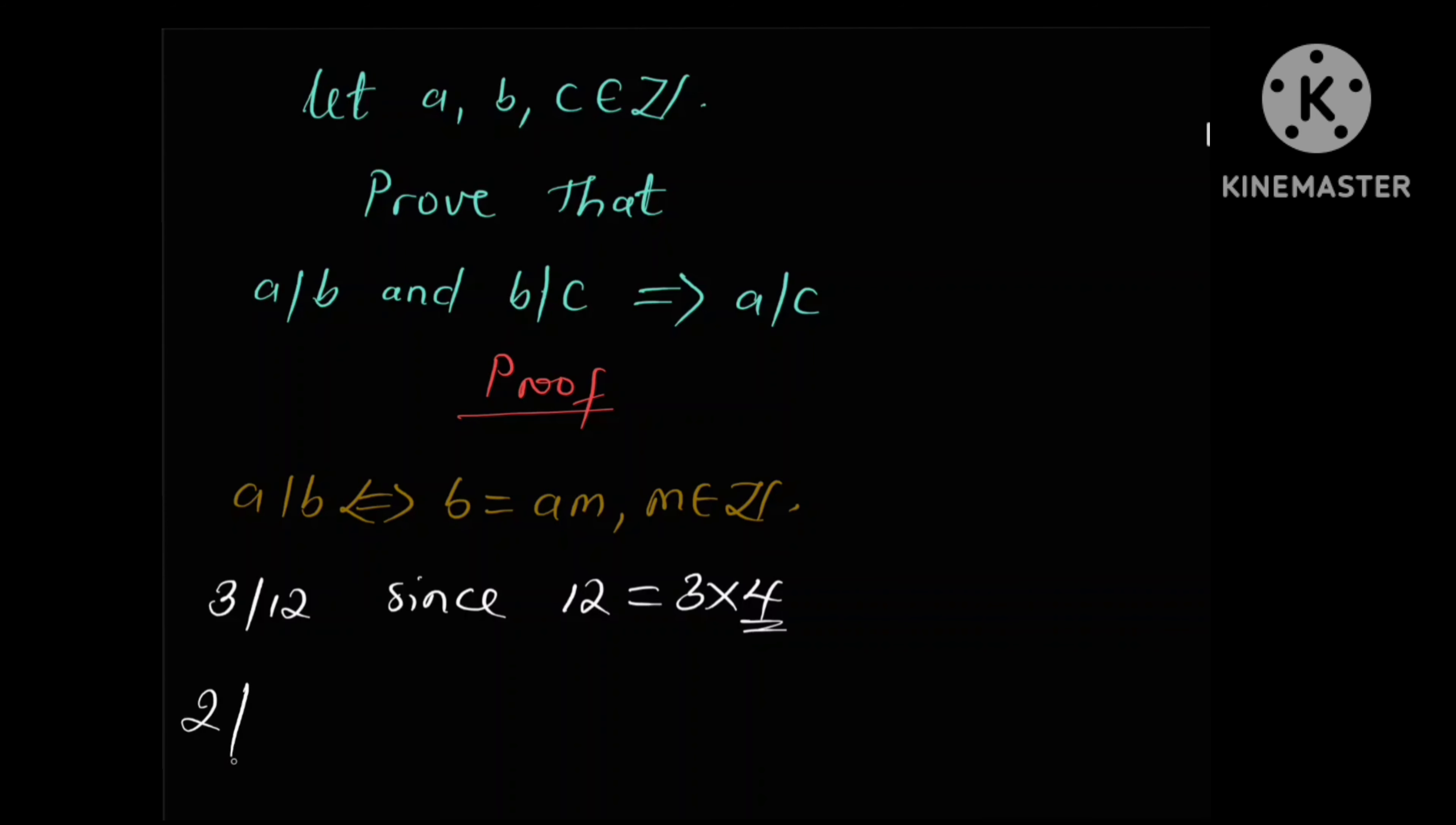We also know that 2 divides 0, since 0 can be written as 2 times 0, and this 0 is an integer.